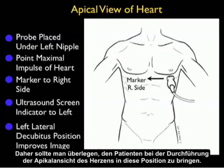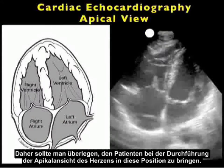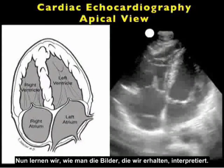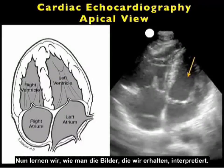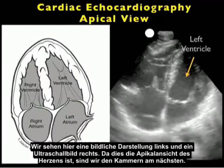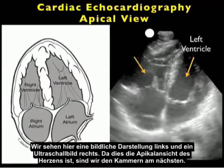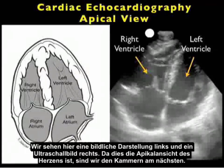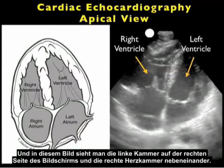Thus, it's important to consider moving the patient into this position when performing the apical view of the heart. That's with the caveat that the ultrasound screen indicator is positioned towards the left of the screen. Now let's learn how to interpret the images that we'll obtain. We see here a pictorial to the left and an ultrasound image to the right. As we're imaging from the apical view of the heart, we're closest to the ventricles.